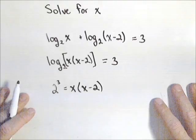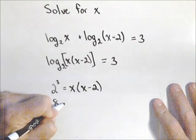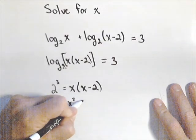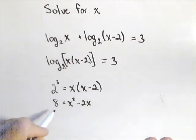So here's the equation we need to solve to finish this. So two cubed is eight equals x squared minus two x. So we're going to have a quadratic, so let's get it equal to zero.